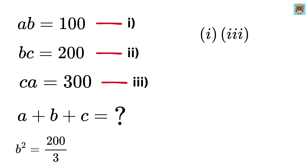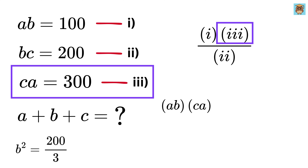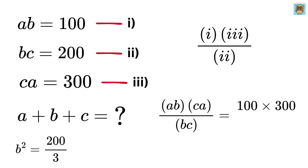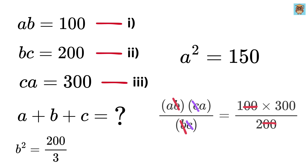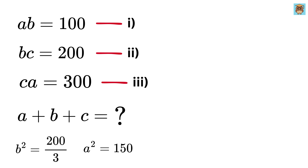In step two, I multiply the first equation with the third equation and divide by the second equation. So we get ab times ca over bc equals 100 times 300 over 200. Here b will get cancelled out and c will also get cancelled out, and we are left with a squared, which equals 300 over 2 or 150.